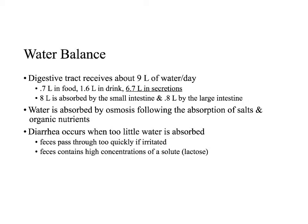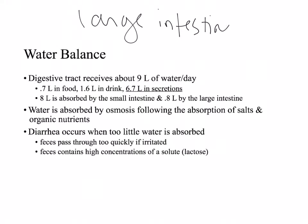We're going to talk about the large intestines. The first topic is water balance. It's important to realize there's a lot of water going into the GI tract. We have to reabsorb most of it or we'll be dehydrated. The digestive tract receives about nine liters of water a day — about 0.7 liters in food, about two liters in drink, and 6.7 liters in secretions.